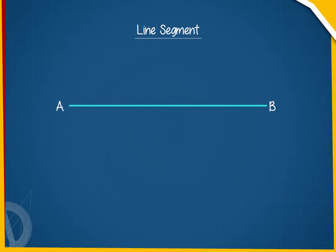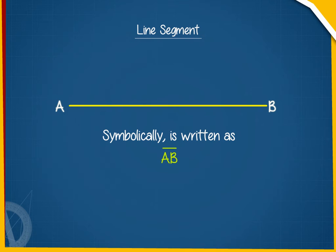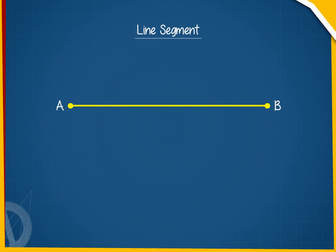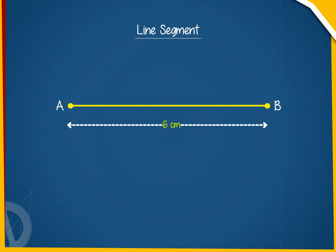Line segment AB is symbolically written as shown here. Take a point A. From this point, draw a line of 6 cm to another point B. This AB is a line segment.